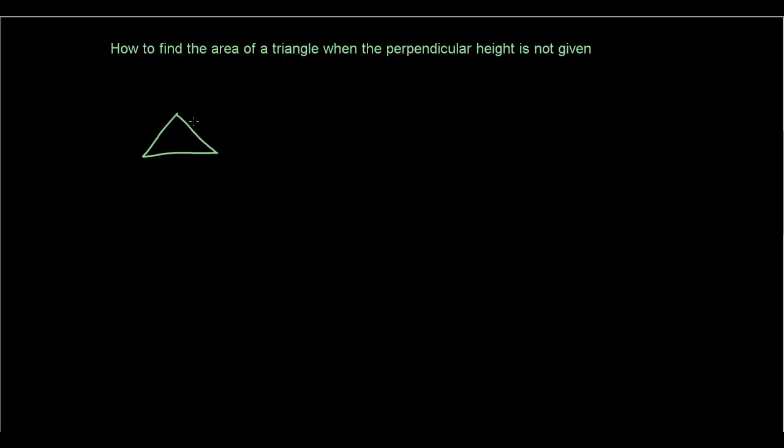So firstly, let's draw a triangle. And let's say we have the perpendicular height. So let's say the perpendicular height is h, and the base is the length of this side here. The area is normally half times base times height.